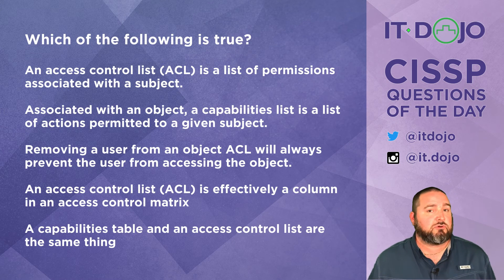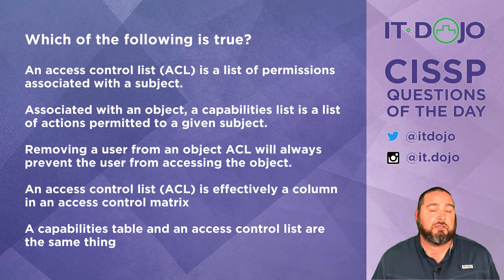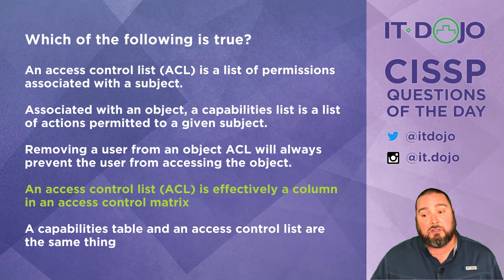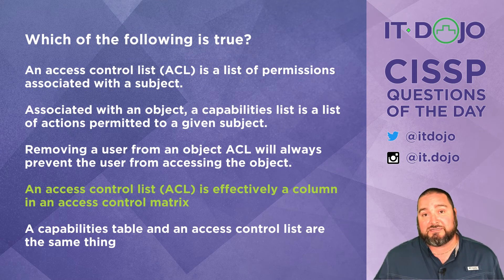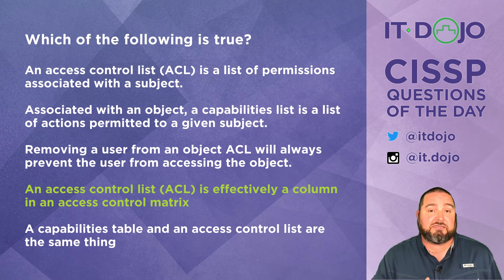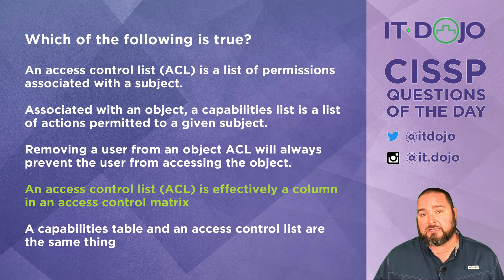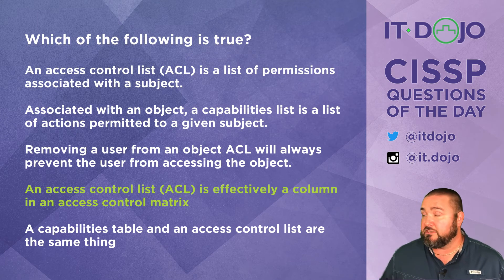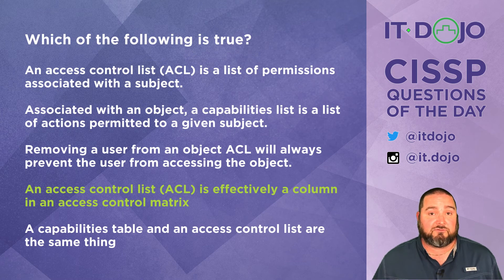The next-to-last answer choice says that an access control list is effectively a column in an access control matrix — this is a true statement. Columns in an access control matrix are the respective objects and the level of access that corresponding subjects have to them, which is very much what an ACL is. The capabilities table is more akin to the rows. An access control matrix is the combination of both an ACL and a capabilities table.